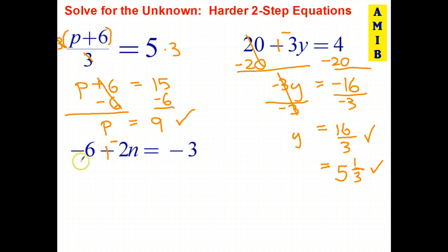So if I'm adding negative 6, the opposite of that is just adding positive 6 to both sides. So just think about that one for a second. I'm adding negative 6. To cancel out adding negative 6, I add positive 6. 6 plus negative 6 goes to zero. And I'm left with just negative 2n. And negative 3 plus 6 is positive 3.